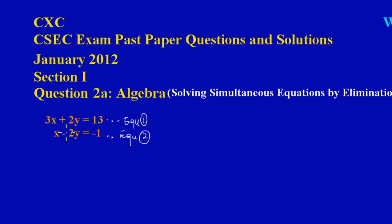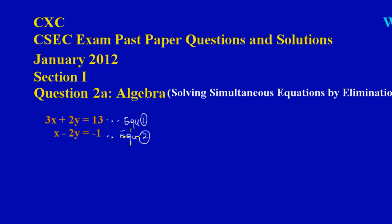The only time you can add directly when solving simultaneous equations is when the coefficients on the variable are the same and the signs are different. If that's not the case, you have to treat it differently — you would use the coefficient in equation two to multiply equation one, or the coefficient in equation one to multiply equation two, depending on which variable you want to eliminate. If you're not clear on that, check out our playlist on simultaneous equations for more worked examples.